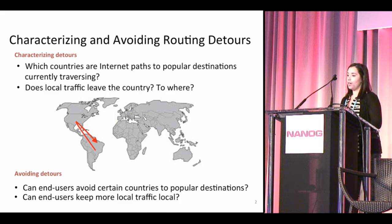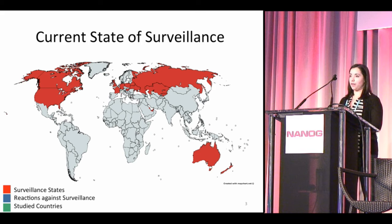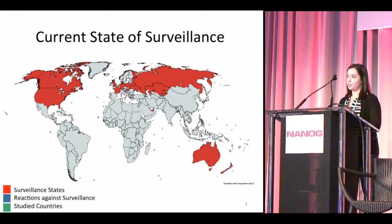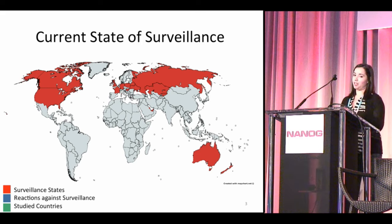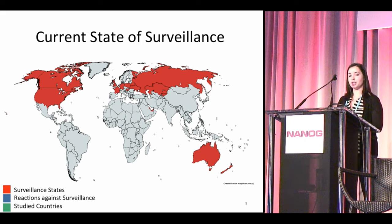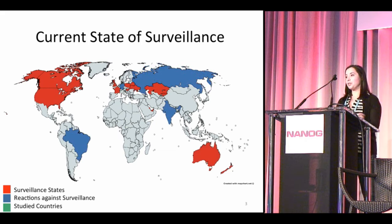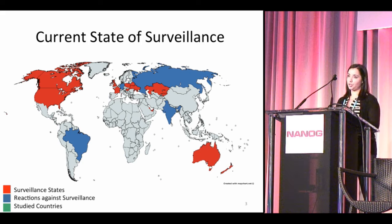There are a number of countries passing mass surveillance laws. The countries in red show just a few conducting surveillance, and they do this at different levels of intensity. Some are collecting metadata, while others are forcing ISPs to install black boxes that collect everything. One important thing to note is that there are also surveillance agreements between countries. One of the most famous is the Five Eyes Agreement — between Canada, the United States, the United Kingdom, Australia, and New Zealand — and they share all their collected surveillance data.